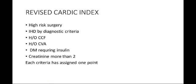Now we will see the revised cardiac risk index. The revised cardiac risk index consists of: first, high-risk surgery — these are intraperitoneal, intrathoracic, supra-inguinal vascular procedures. Second, IHD by diagnostic criteria. Third, history of congestive cardiac failure. Fourth, history of CVA — cerebrovascular accident. Fifth, diabetes mellitus requiring insulin.